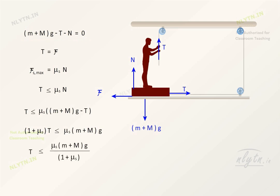Solving for T, we get T as less than or equal to μₛ(m + M)g divided by (1 + μₛ).